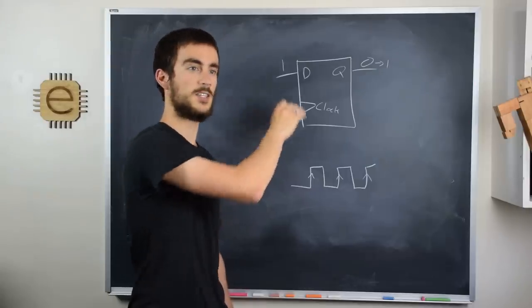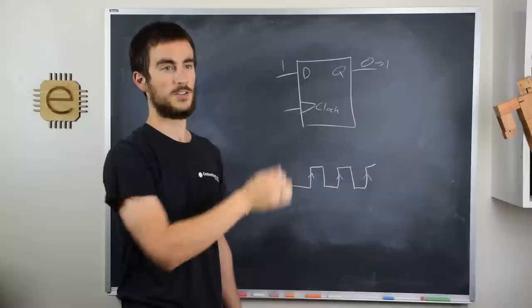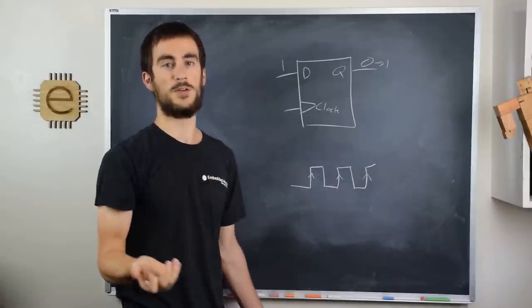Now what's great about this then, is Q will stay 1 until the next rising edge of the clock. So D is free to change and become invalid values.